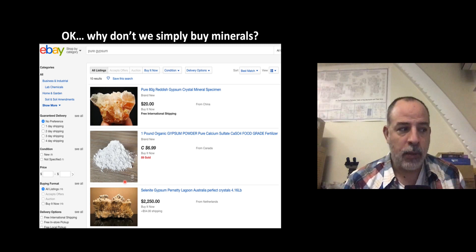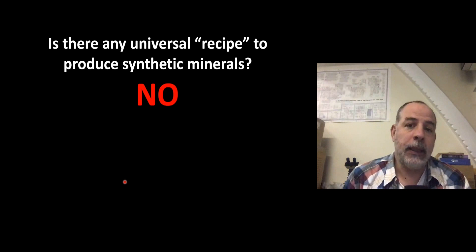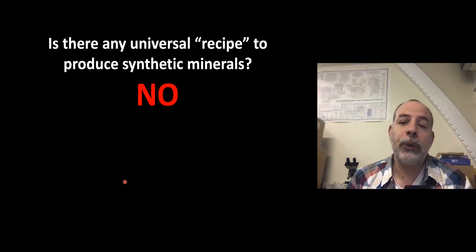I am going to summarize the problem we are facing with four main questions. First: is there any universal recipe to produce synthetic minerals? The answer is no. Because there are many minerals in nature — more than 4,500 — and each mineral has its own stability field, so one recipe that could be fantastic to produce one mineral could be completely useless to produce another one.